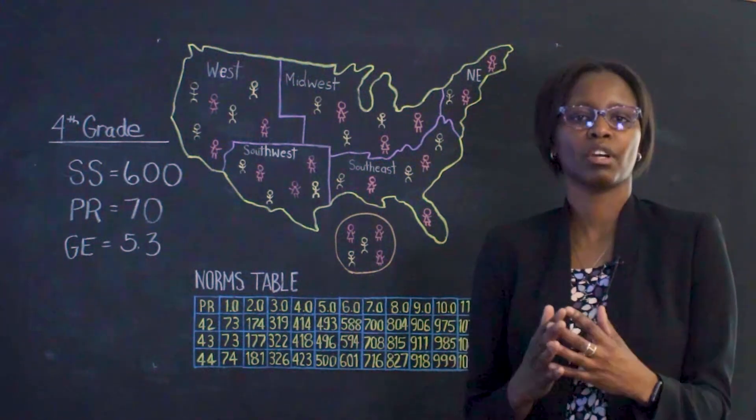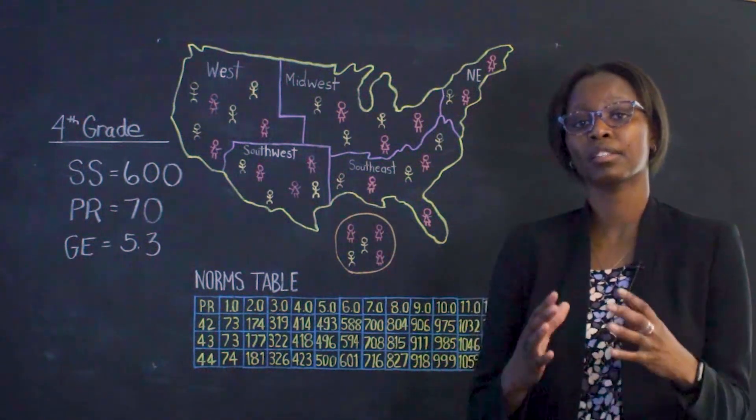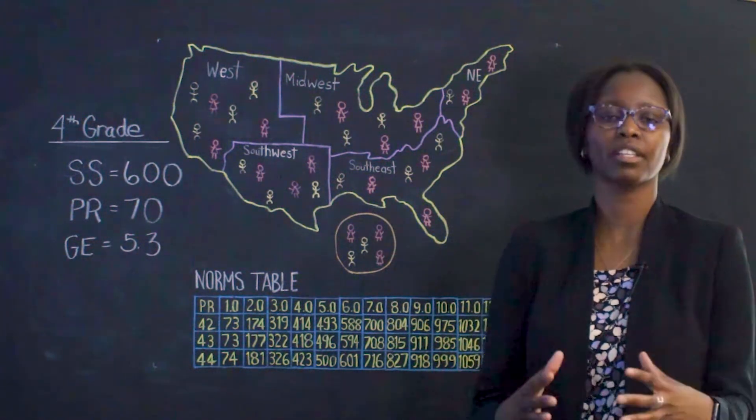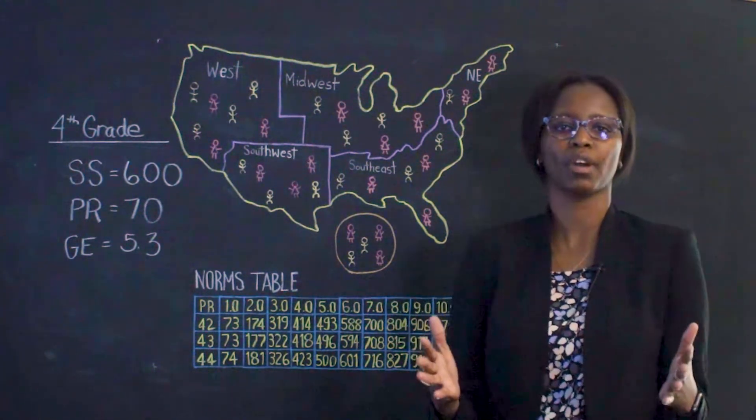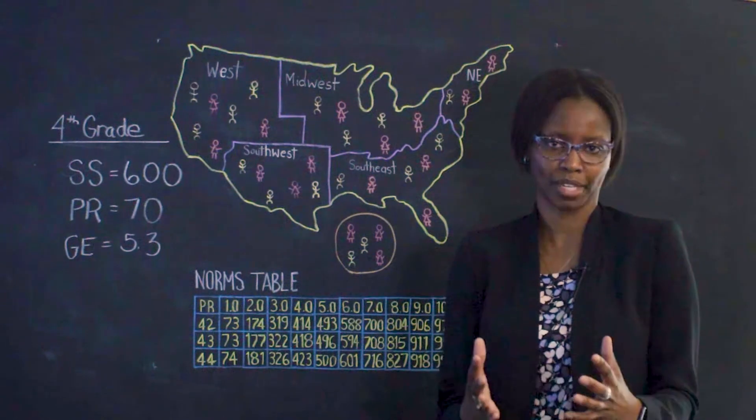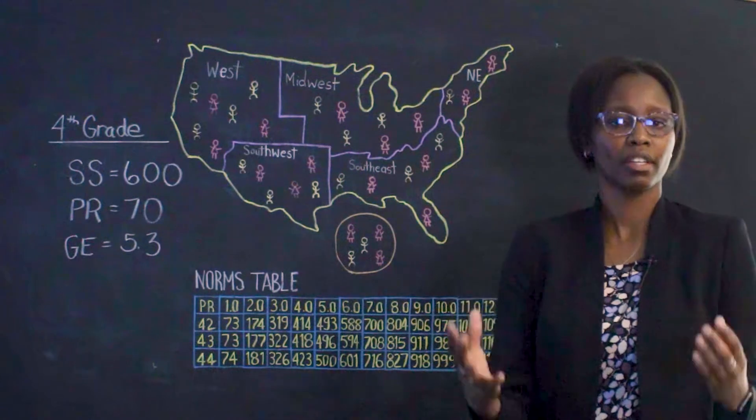At the end of a star assessment, as an example, the only score that you get is a skilled score. Let's say you get a skilled score of 600. If you don't know anything else and that's all you have, your next question might be, is that a good score or not?